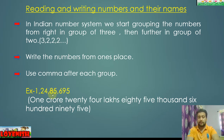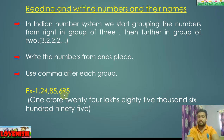Next comes lakh and ten lakh — the lakh group — then we put a comma. Next is crore, so we put a comma here as well. That is the Indian place value system.